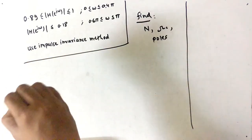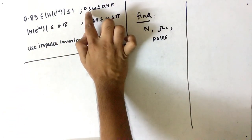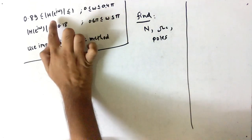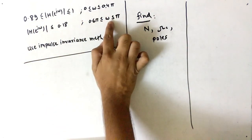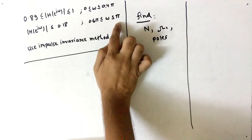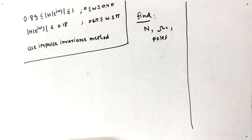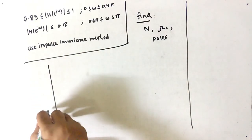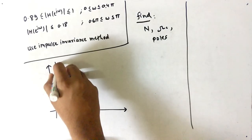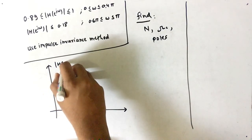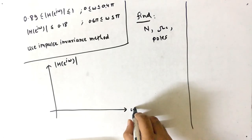Let's look at the given part. Omega ranges from 0 to 0.4π and our amplitude decreases from 1 to 0.89. When omega ranges from 0.6π to π, our magnitude decreases from 0.18. Let's plot the graph — the y-axis has the amplitude, mod of H(e^jω), and the x-axis has omega.